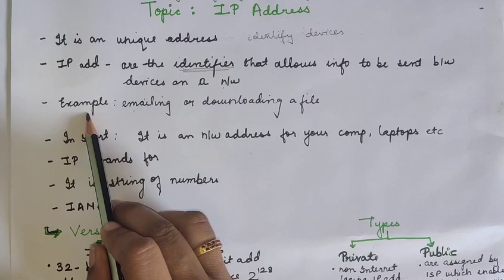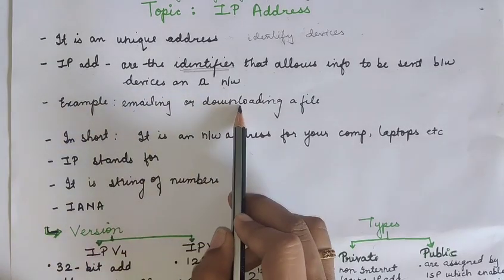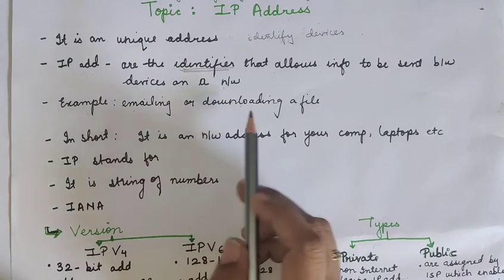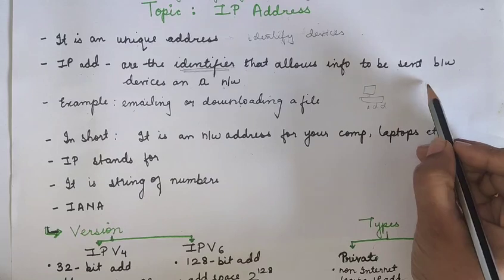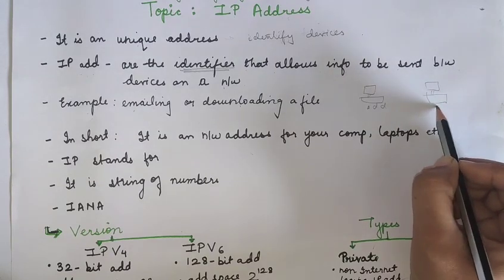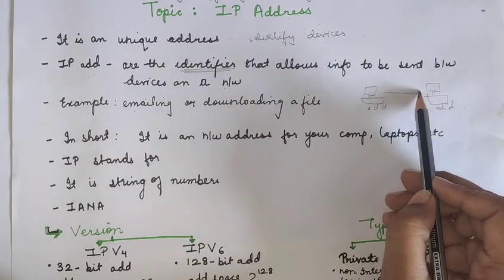So now let's try to understand it with the help of an example. For example, if you want to do anything on the internet like emailing or downloading a file, your computer must have an address. Similarly, your destination should also have an address to deliver the data to the proper destination.